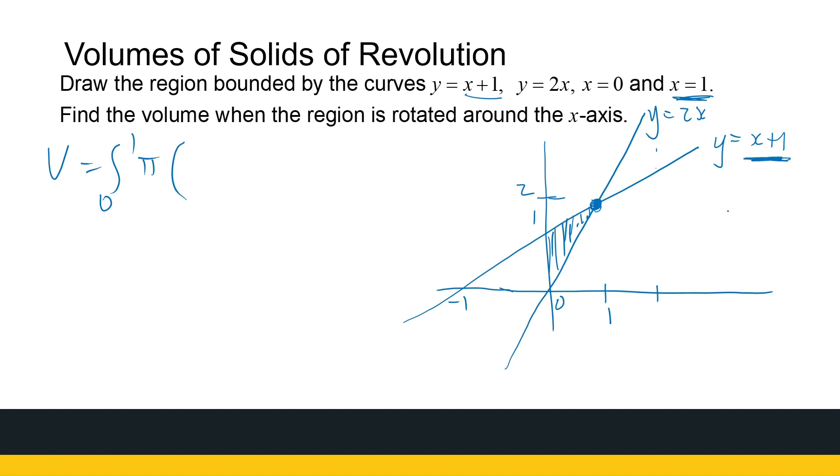So this is going to be for my washer. That's going to be the bigger radius. So it's x plus 1 squared minus the inside one, which is 2x, 2x squared dx.